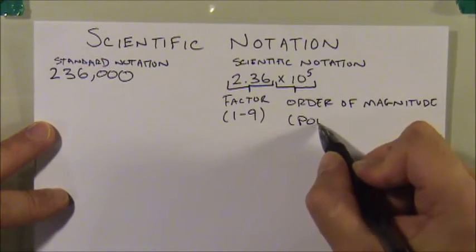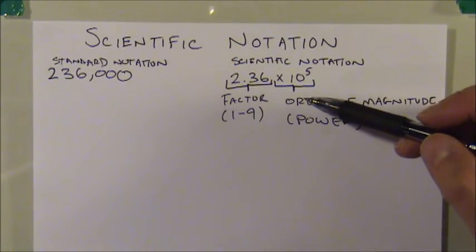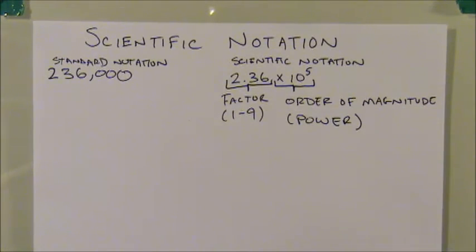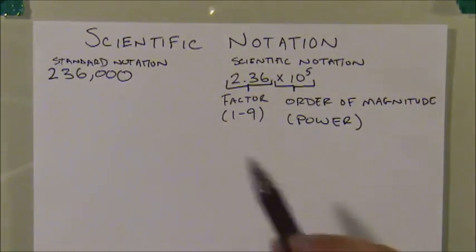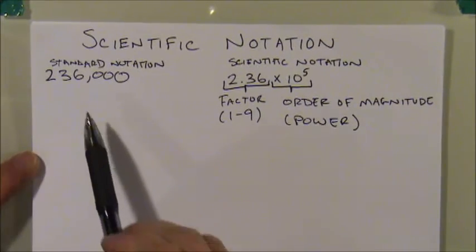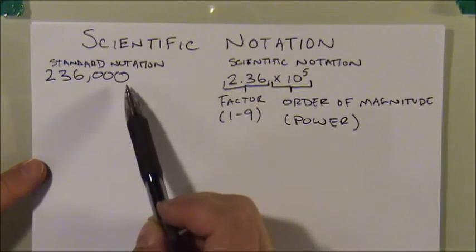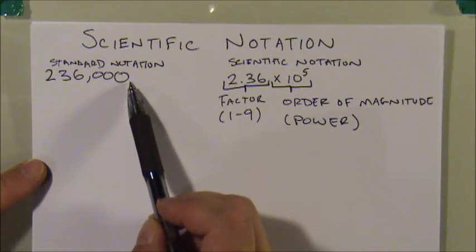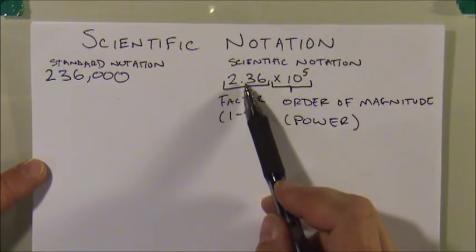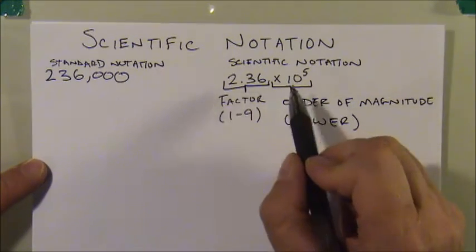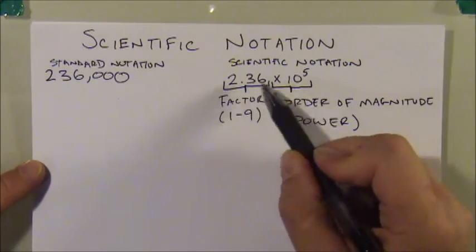To take a number from standard notation into scientific notation, you decrease the number in size on one end and increase it on the other, so the two undo each other and return the original number. For example, 236,000 is much larger than 2.36 — I've made it a hundred thousand times smaller by moving the decimal five places to the left. So I multiply by ten to the fifth to undo that.